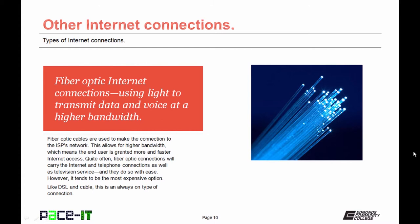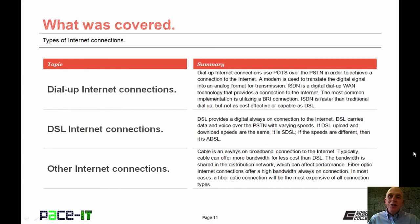Fiber optic internet connections use light to transmit data and voice at a higher bandwidth. Fiber optic cables are used to make the connection to the ISP's network, allowing for higher bandwidth so the end user is granted more and faster internet access. Quite often fiber optic connections will carry not only internet but also telephone service. However, it does tend to be the most expensive option for connecting to the internet. Like DSL and cable, fiber optic connections are a type of always-on connection to the internet.